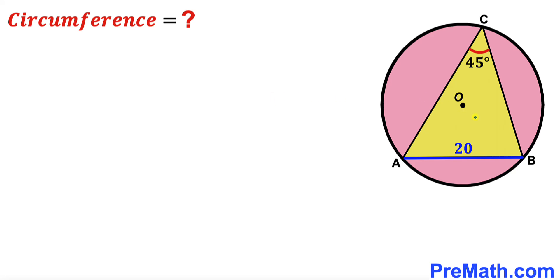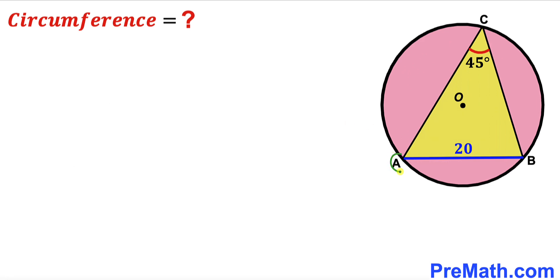Welcome to PreMath. In this video we have got this yellow shaded triangle ABC fully inscribed in a circle with the center O, such that this angle ACB is 45 degrees and this chord AB is 20 units. This chord AB is the side length of this yellow shaded triangle. These points A, B, and C are on the circle, and our task is to calculate the circumference of this circle.